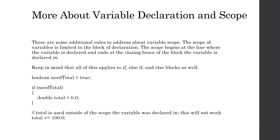In the example we have right here, we're creating a boolean called `needTotal` and setting it to true. When we come into the if statement block, we say if needTotal. Since that's true, we execute the one line in that block — declaring a double called `total` and setting it to zero. Outside of that block, we try to use `total`, but total is used outside of the scope the variable is declared in. Even though we declared it earlier, this won't work because we're now outside the scope where total was declared — our program can no longer see that variable.